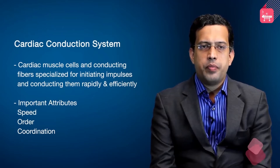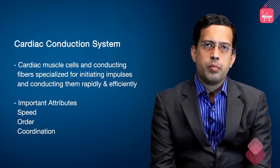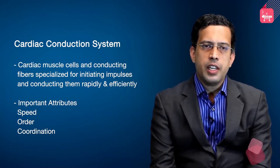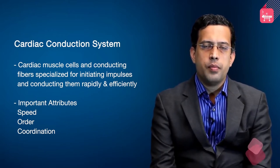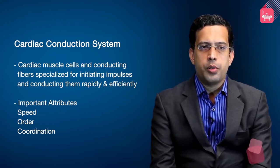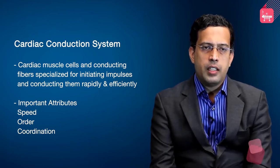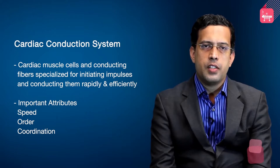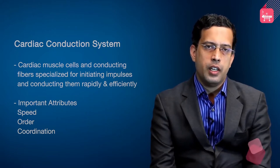When we talk about bradyarrhythmias, in order to get a good understanding of that we need to have a good understanding of the basic conduction system of the heart. The cardiac conduction system involves a set of cardiac muscle cells and specialized conducting fibers that initiate impulses and conduct them very rapidly and efficiently throughout the heart. The important attributes of a normal cardiac conduction system are speed, order of conduction, and a coordinated method of activation of the heart.